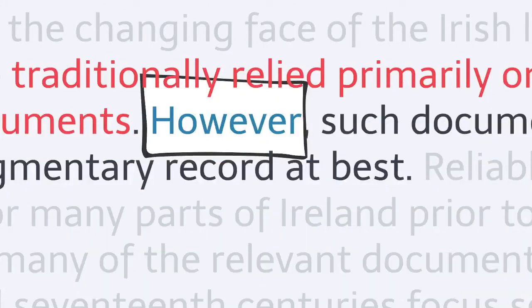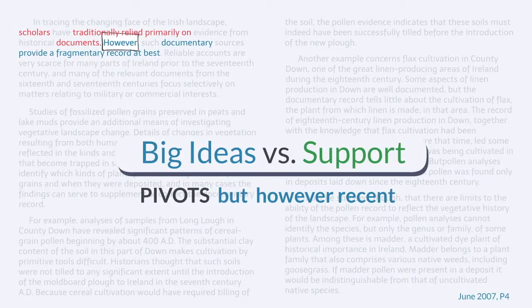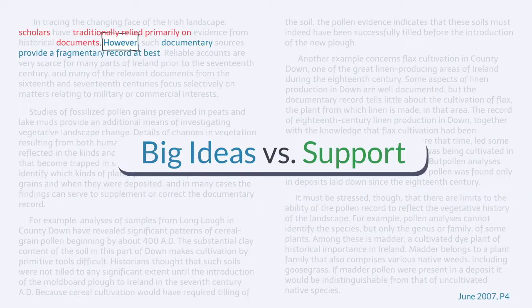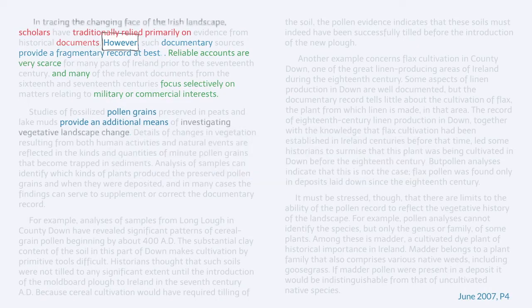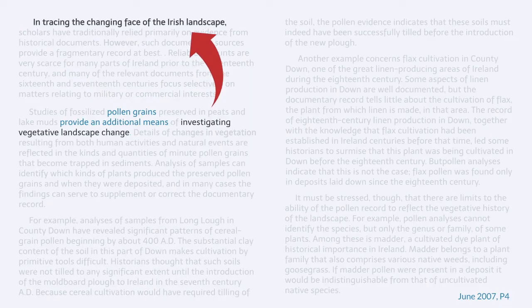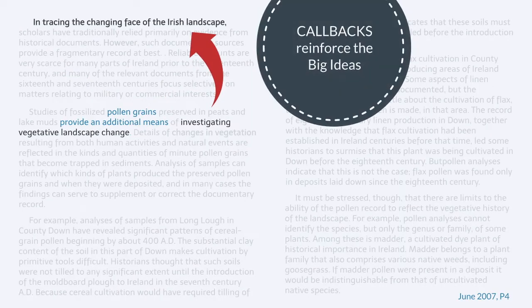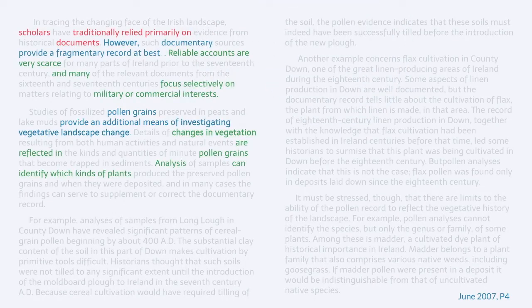When we see a pivot word like but, yet, however, recently, that almost always will mean a big idea. The last sentence in the first paragraph was like a premise — it was unpacking reasons why the documentary record is fragmentary. Big idea number two was pollen grains. How did we know it was a big idea? Well, the callback language — we're talking about a different way to investigate landscape change, to trace the changing face of the landscape. The rest of this paragraph felt like support because they were just reiterating that changes in vegetation are reflected in pollen, and analyzing pollen can help you identify what the plants were.